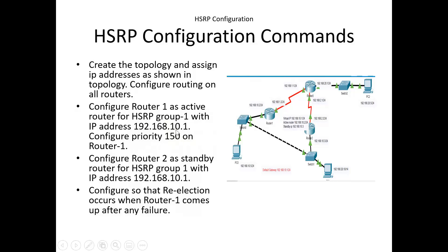By default, the priority on all routers for HSRP is 100. If both routers have the same priority, the router with the highest configured IP address on the Gigabit interface becomes the active router. But if we want to explicitly make Router 1 or Router 2 the active router, we can increase that router's priority. Here we configure Router 1 as active by increasing its priority to 150.